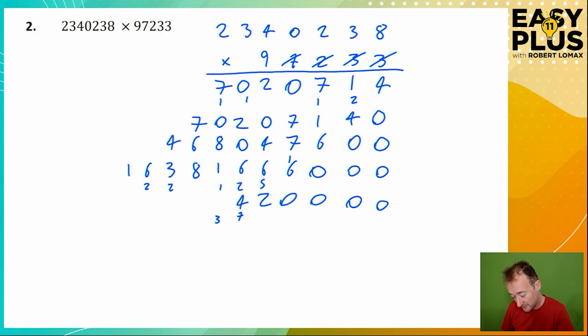9 times 2 is 18, and the carried 3 gives us 21. 9 times 0 is 0, but we've got the carried 2. 9 times 4 is 36. 9 times 3 is 27, we've got the carried 3, gives us 30. We're almost there. We have to be very careful not to make mistakes as we head on to the home straight. 9 times 2 is 18, and the carried 3 makes it 21.